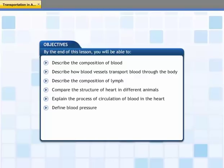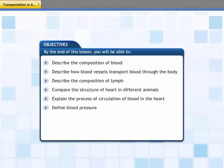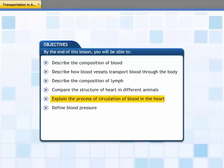This lesson explains how various substances like blood and lymph are transported through the bodies of animals. By the end of this lesson, you will be able to: describe the composition of blood; describe how blood vessels transport blood through the body; describe the composition of lymph; compare the structure of the heart in different animals; explain the process of circulation of blood in the heart; and define blood pressure.